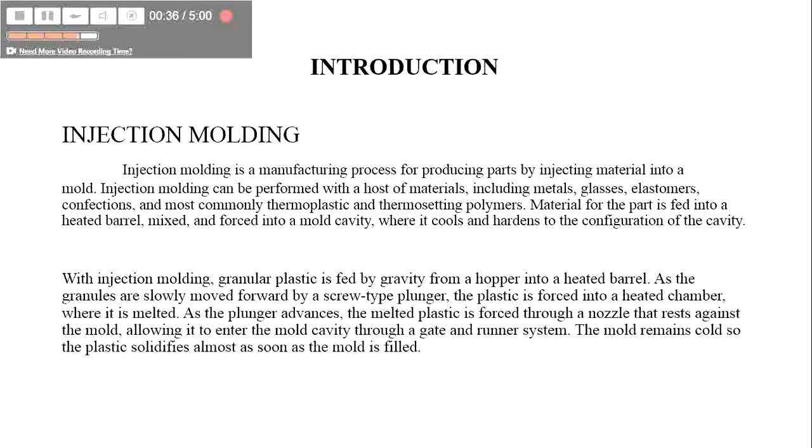Introduction to injection molding: it is a manufacturing process widely used to produce parts from materials such as metals, glasses, elastomers, and other thermoplastics and thermosetting polymers.